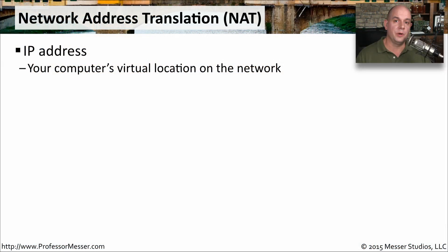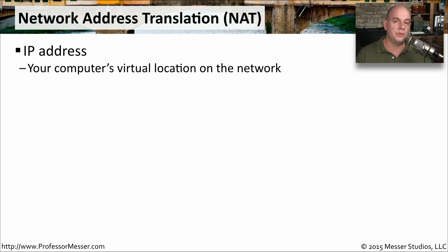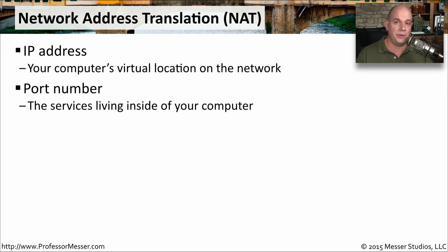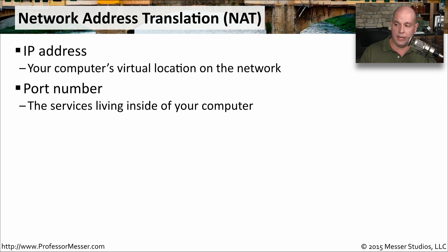The address we generally refer to when we talk about network address translation is the IP address of a device on the network — this is the address we want to change as traffic goes from one side of the network to the other. Another address we sometimes refer to is a port number, specifically a UDP or TCP port number. Many times when talking about NAT, we're really talking about changing both of these at the same time.